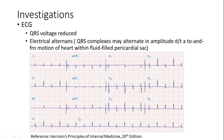As you can see in this ECG, the axis of the QRS complex is changing beat to beat — there is variation in the axis of the QRS complex, which is suggestive of electrical alternans.